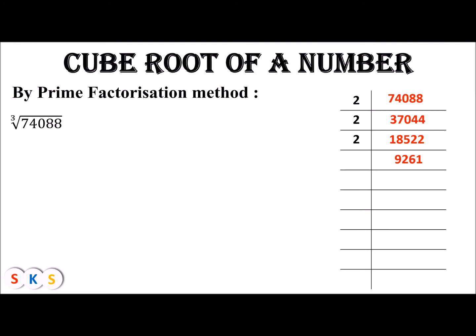The next prime number is three. We check if 9,261 is divisible by three using the digit sum rule: nine plus two is eleven, eleven plus six is seventeen, seventeen plus one is eighteen. Eighteen is divisible by three, so 9,261 is divisible by three.